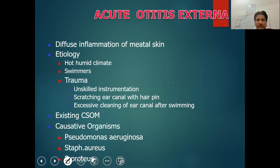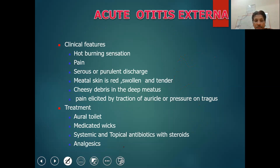Next is diffuse acute otitis externa — a disease form easily triggered by unclean instrumentation when the patient scratches the canal, leading to circumferential canal involvement with all quadrants involved. If the whole circumferential canal wall edema is present, it is called the diffuse form of acute otitis externa, also commonly seen in swimmers. The causative agents are Pseudomonas aeruginosa and Staphylococcus aureus. You need to give good aural toilet, clean the canal, give a medicated wick, and give steroids to reduce the edema.